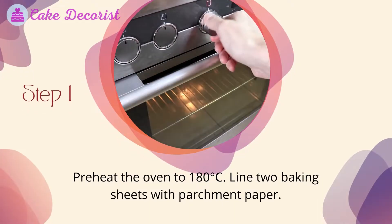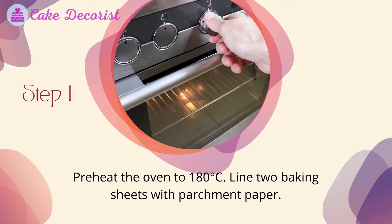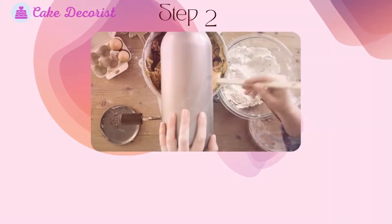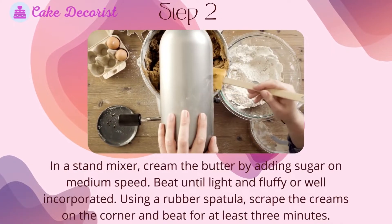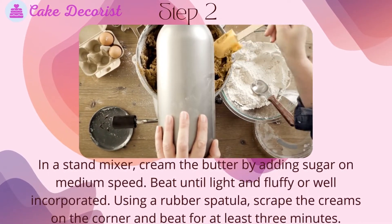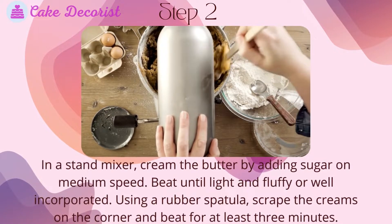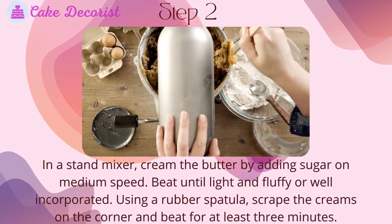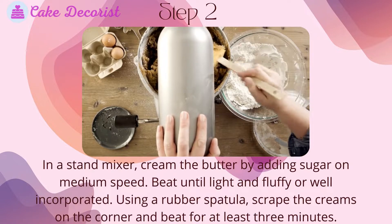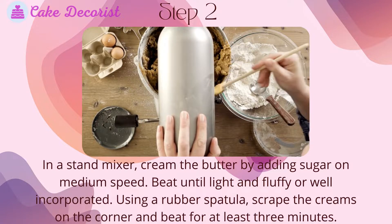Step one: preheat the oven to 180 degrees Celsius and line two baking sheets with parchment paper. Step two: in a stand mixer, cream the butter by adding sugar on medium speed. Beat until light and fluffy and well incorporated.